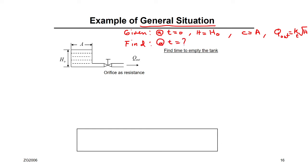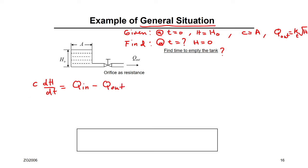Find the time it will take when the head inside the tank equals 0 — that is, how much time to empty the tank. This is a very simple problem. You start with the equation of motion: C·dH/dt = Flow in minus Flow out.